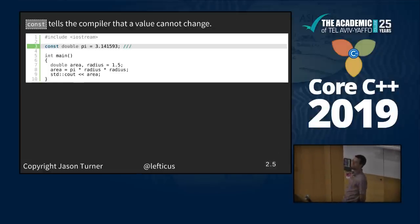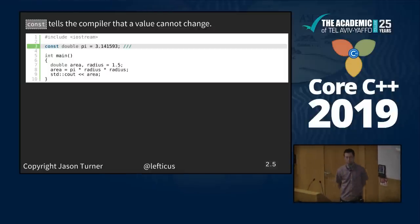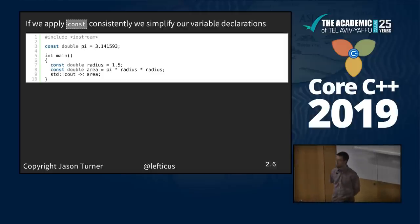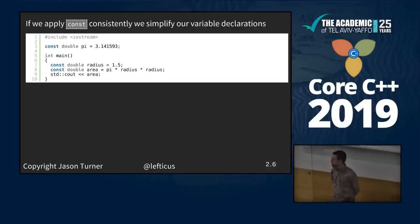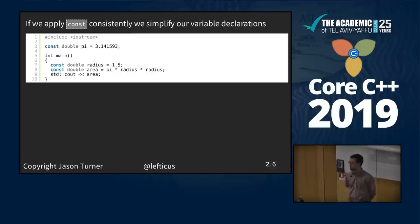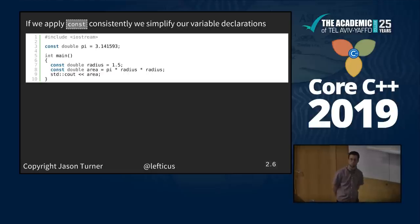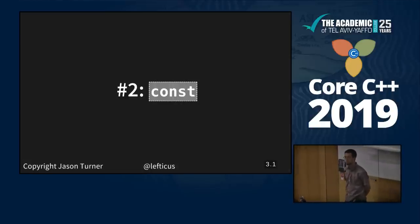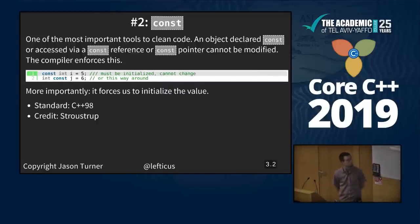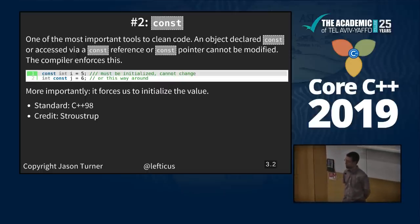Const. We're moving in a certain direction here. Const tells the compiler that this value cannot change. If we apply const consistently, we also get to simplify the rest of our variable declarations. I really don't like having an uninitialized variable on one line and initializing it on the next — applying const forces us to initialize it. So we have const, number two: one of the most important tools for clean code.